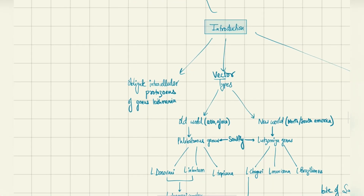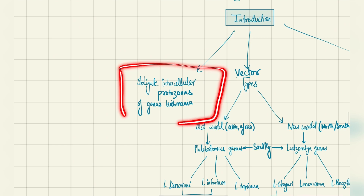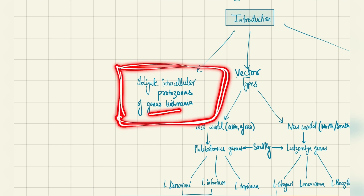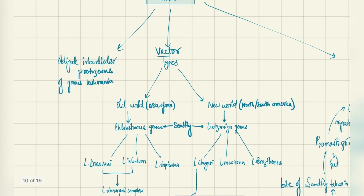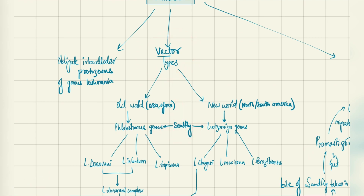Leishmaniasis is caused by an obligate intracellular protozoan of the genus Leishmania, hence the name of the disease. It is transmitted by a vector which is the sandfly, and the sandfly is classified into different types.